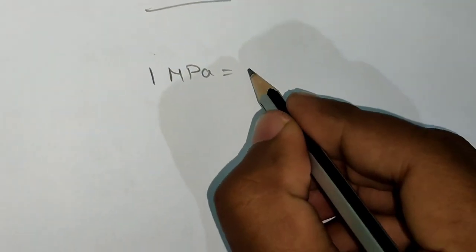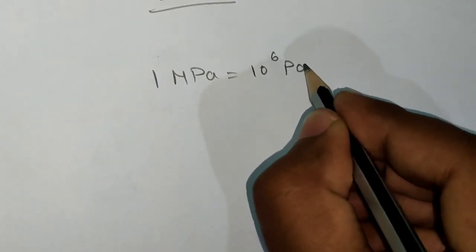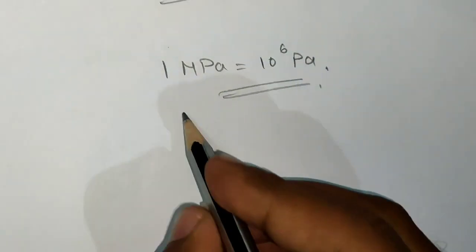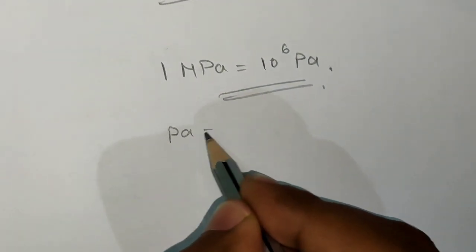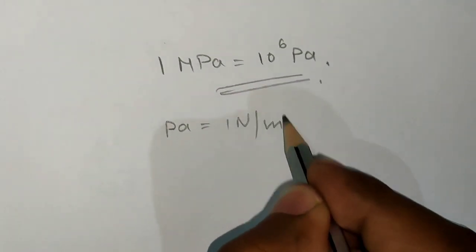1 megapascal equals 10^6 Pascals. How did this come about? We know that 1 Pascal equals 1 N per meter square, right?